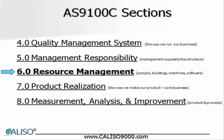Section 6 is titled Resource Management. The resources it applies to are buildings, people, machines, equipment, software, or whatever is needed to make the product or provide the service. The organization must manage its infrastructure, resources, and working environment related to the realization process and the product or service. There are no additional requirements above ISO 9001 in Section 6.